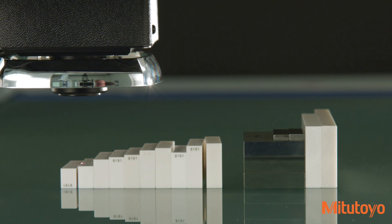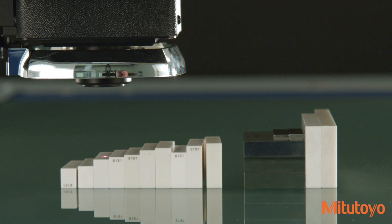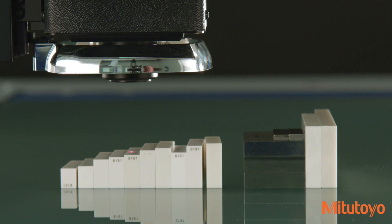Available on most Quick Vision models, the optional Tracking Autofocus, or TAF feature, focuses continuously, adjusting to changes in the height of the object being measured.